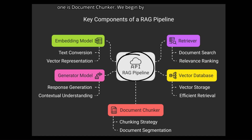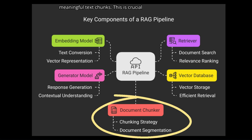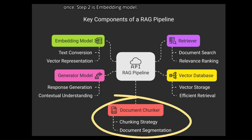Step 1 is the Document Chunker. We begin by splitting large documents like PDFs, reports, or manuals into smaller, meaningful text chunks. This is crucial because large language models can only process a limited number of tokens at once.